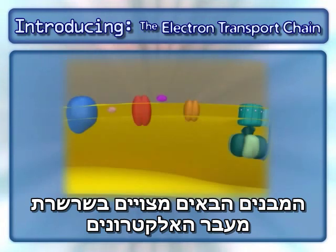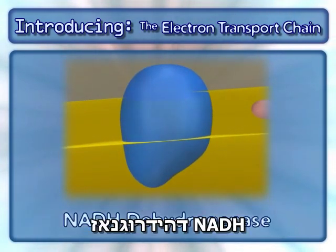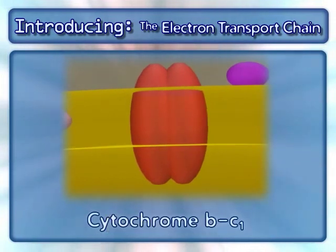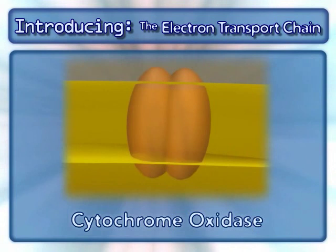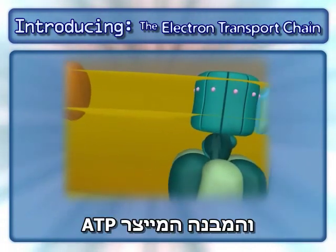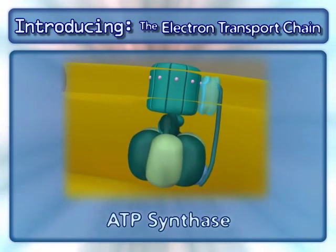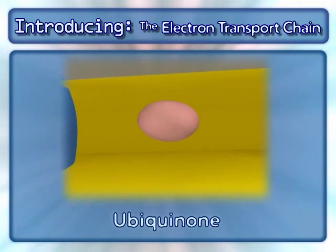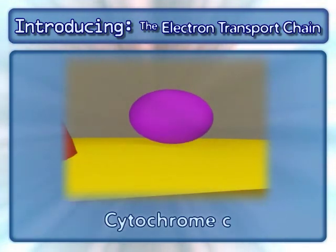The following complexes are found in the electron transport chain: NADH dehydrogenase, cytochrome BC1, cytochrome oxidase, and the complex that makes ATP — ATP synthase. In addition to these complexes, two mobile carriers are also involved: ubiquinone and cytochrome C.